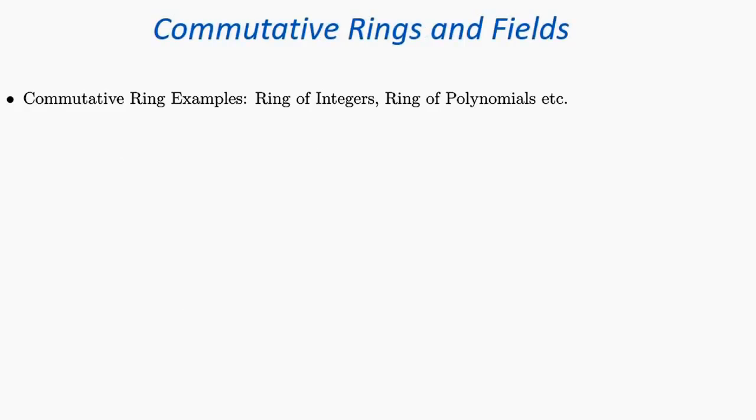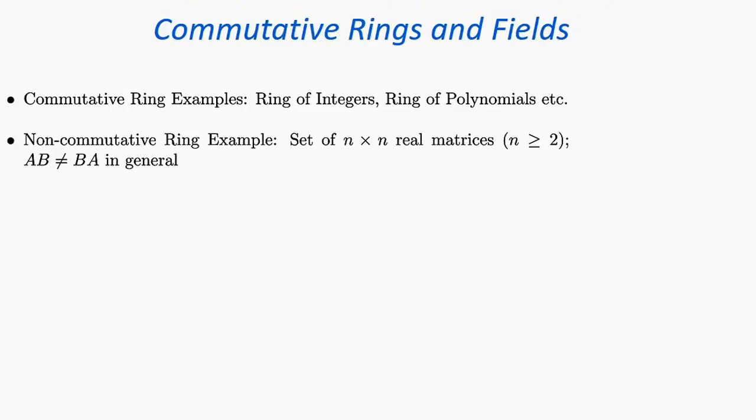Rings can be both commutative and non-commutative. Examples of commutative rings include the ring of integers and the ring of polynomials. An example of a non-commutative ring is the set of n × n real matrices with n ≥ 2. Why is this non-commutative? In general, A times B is not equal to B times A, and therefore it's a non-commutative ring.